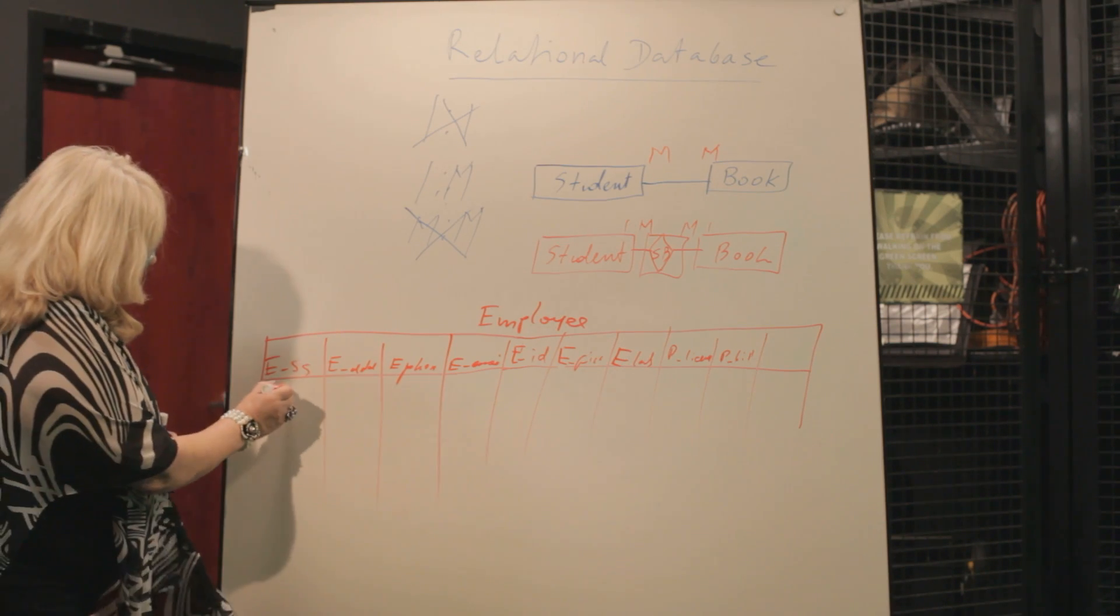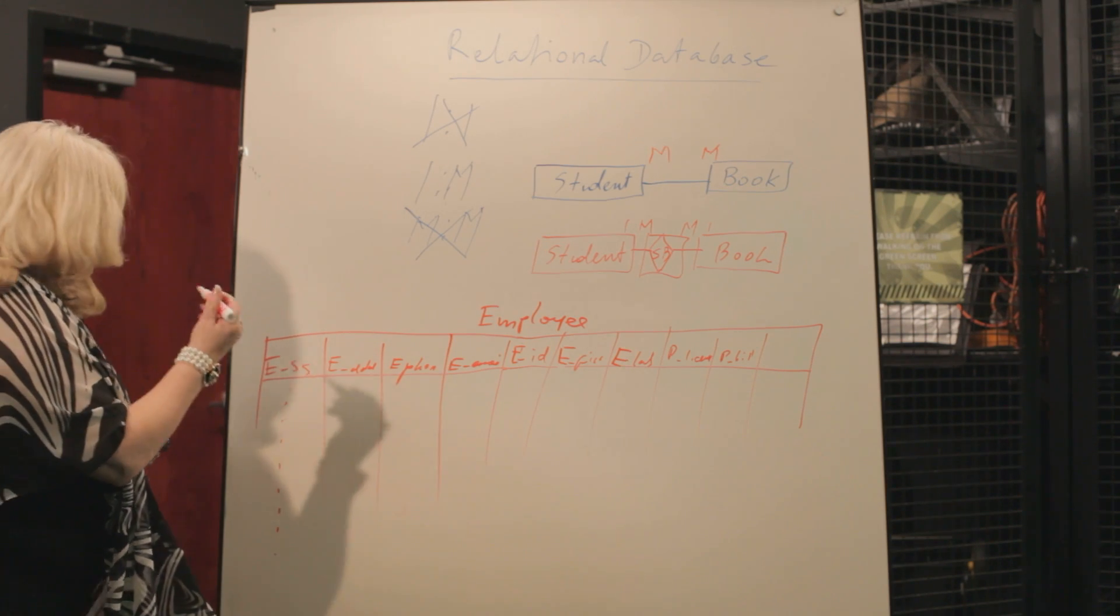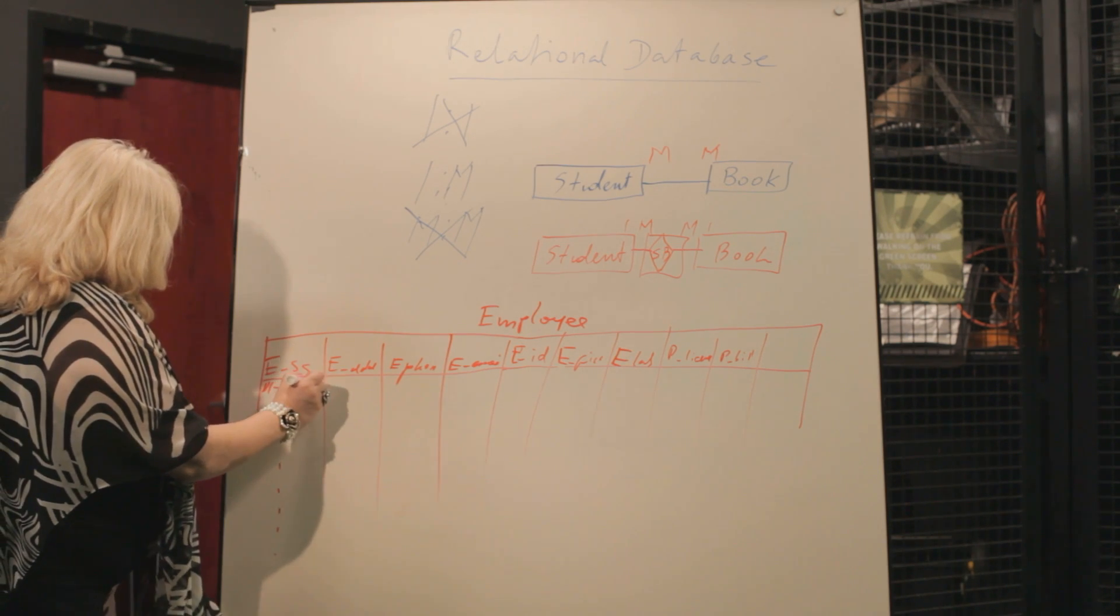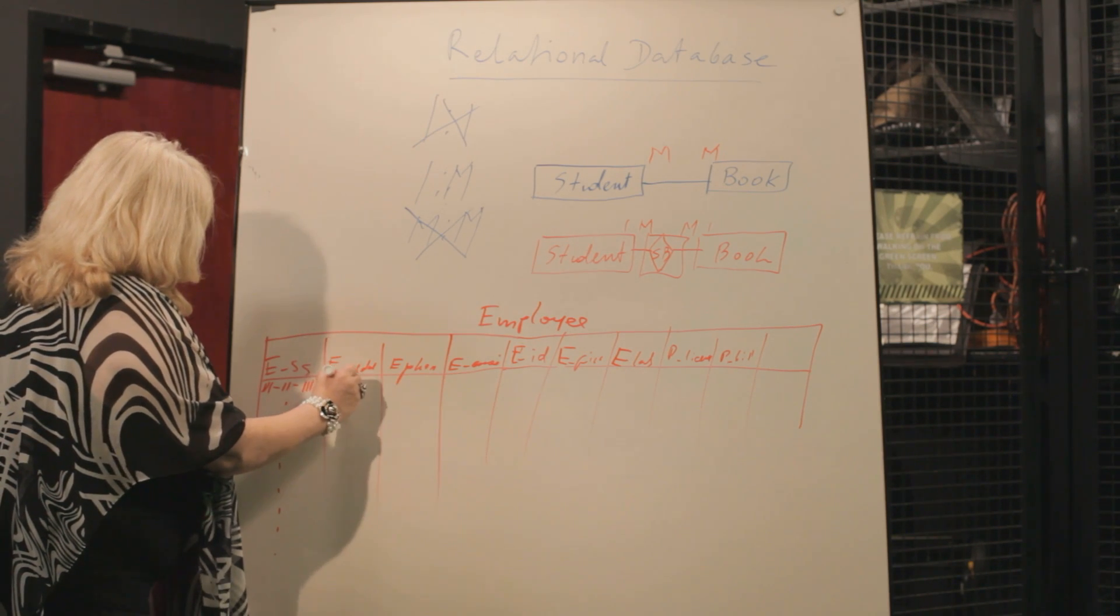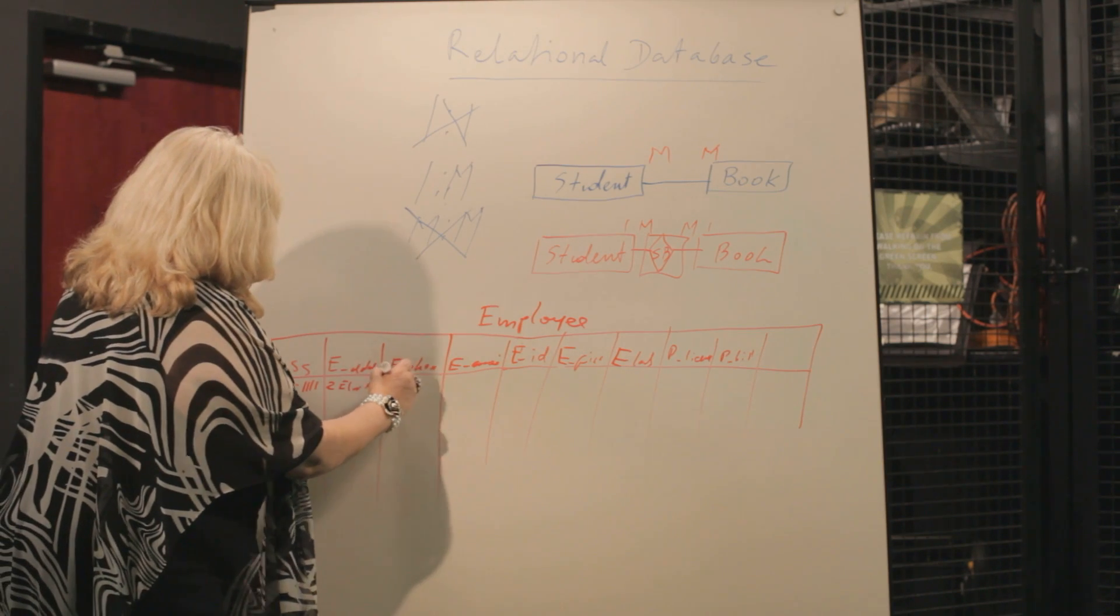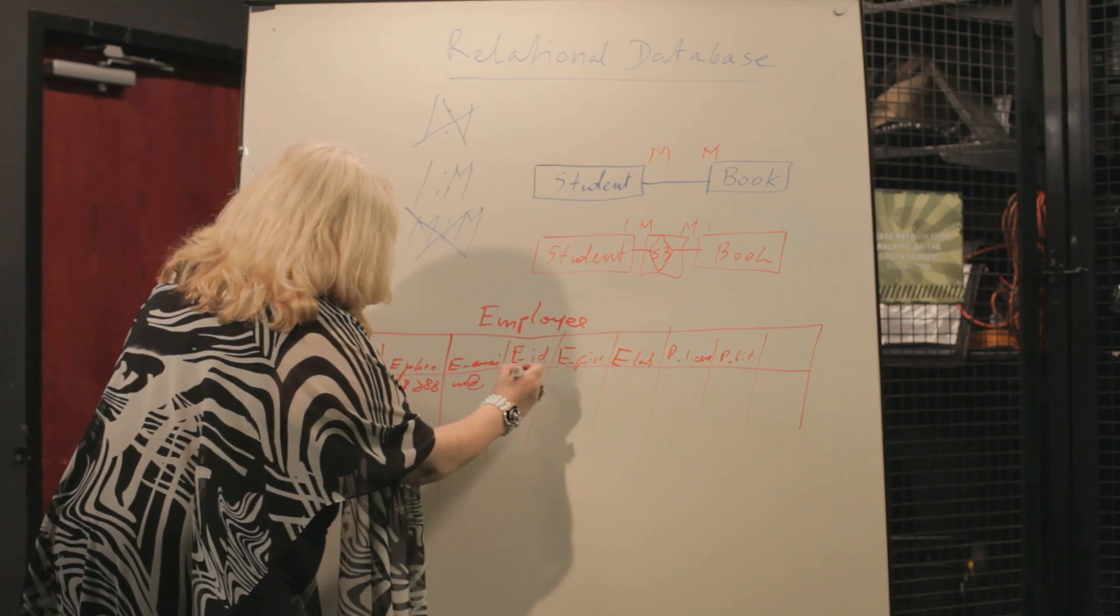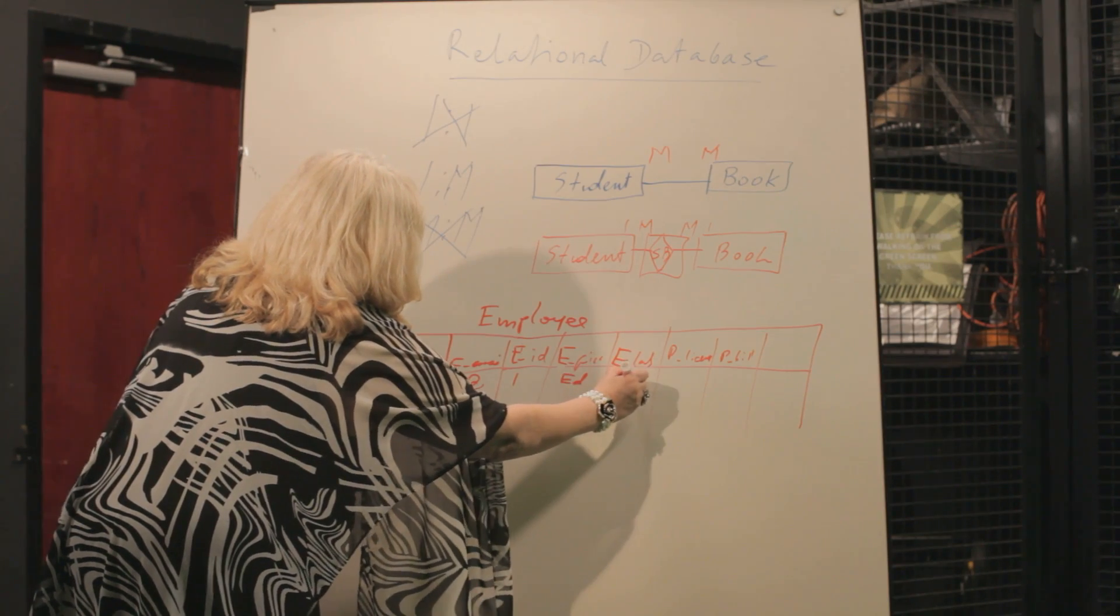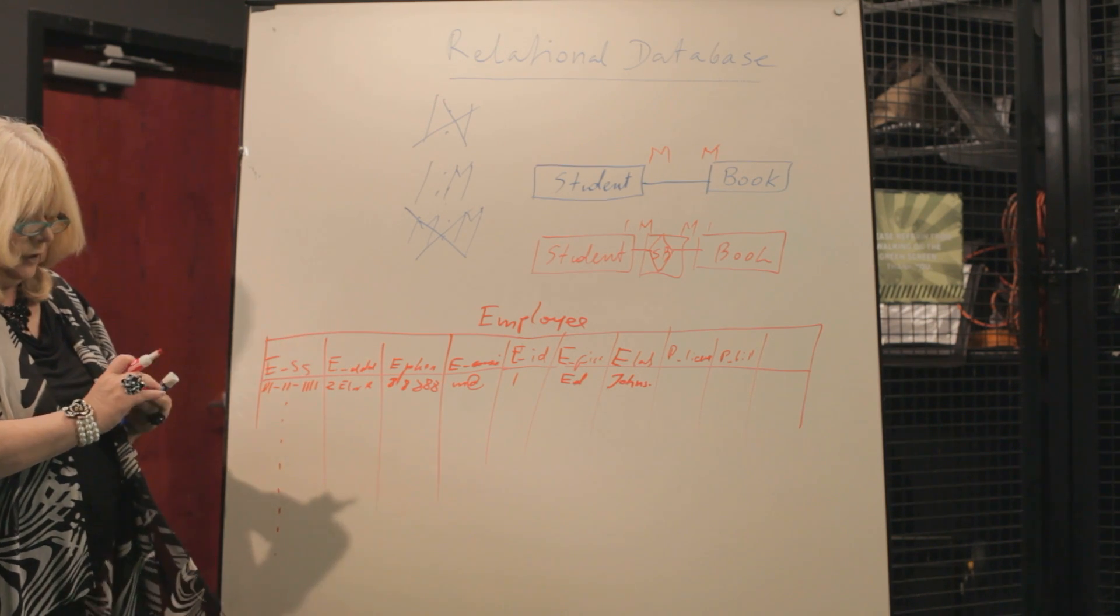So what's going to happen? We're going to have many employees, so it's going to be many entries here. Social security number, I'm not writing my own. And of course here is address, going to be 2nd Elm Road. Here is going to be phone. And email address, something at. And ID number, say for example 1, and first it's Ed Johnson. Then we're coming to license, and we're also coming to Bill of Health.